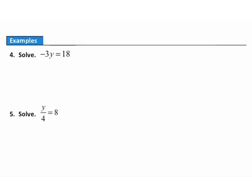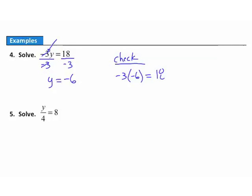Example 4. We're asked to solve this equation. What's keeping y from being all alone is the multiplication by negative 3. To undo multiplication by negative 3, I divide both sides by negative 3. On the left, the common factor of negative 3 divides out, leaving y over 1, which is just y. On the right, 18 divided by negative 3 gives negative 6. Checking: negative 3 times negative 6 equals positive 18, matching the right side. That solution checks.